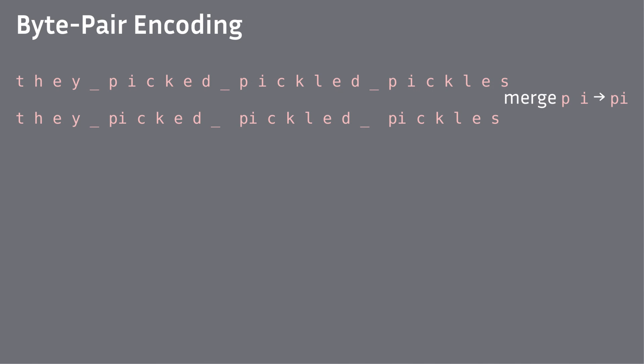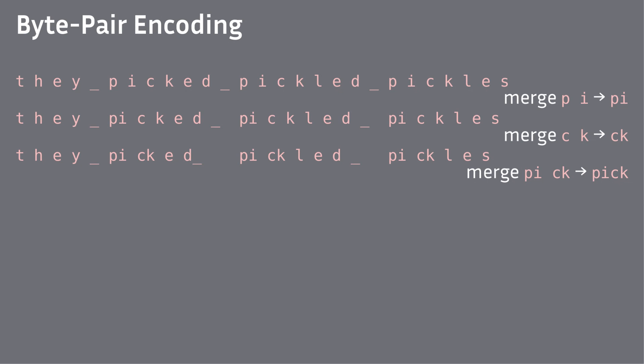Then again, we look at what the most common tuple is. This time it's 'c' and 'k', so we turn those into 'ck'. Once again, we look at what the most common pair of units is, and it's 'pi' and 'ck', so we turn those into a single unit: 'pick'.